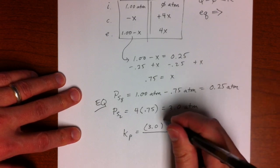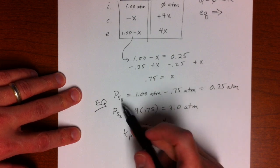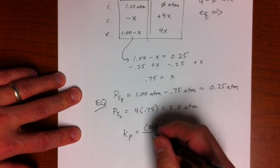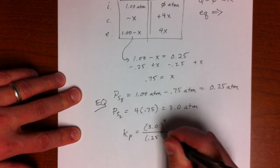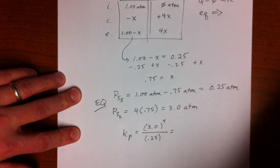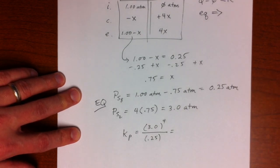So 3.0 to the 4th power over S8 equilibrium pressure 0.25 to the 1st power. So I'm going to use Google to do my calculation.